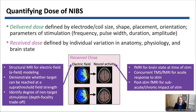On the neural activity side, there are tools to quantify this as well, such as fMRI, so we can characterize the state of the brain at the time of stimulation. We can do concurrent TMS-fMRI to look at the effects of acute stimulation, and also pre-post stimulation to understand the chronic effects, which then feeds into response.